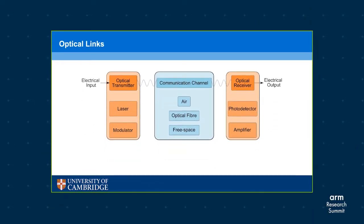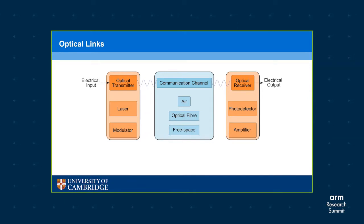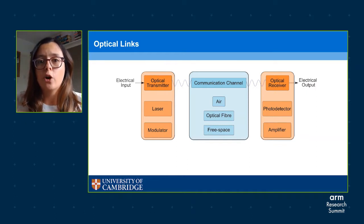This is a generic optical link that consists of an initial data stream in the electrical domain, which is typically driven by CMOS circuitry. This is passed to an optical transmitter which converts the electrical signal into an optical signal using a light source — typically a laser — and a modulator. The modulated output signal is then transmitted over a communications channel. Once it arrives at the destination, it is converted back into an electrical signal by an optical receiver using a photodetector and some sort of amplifier.